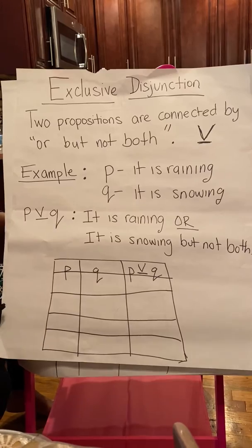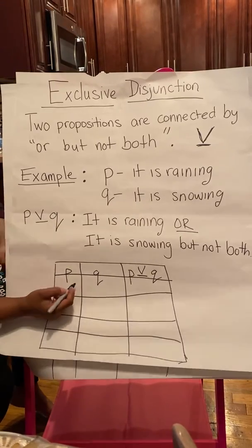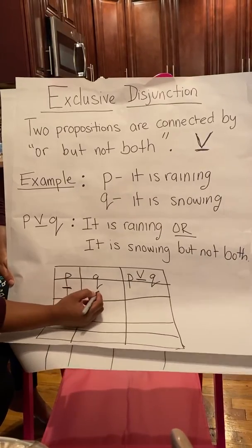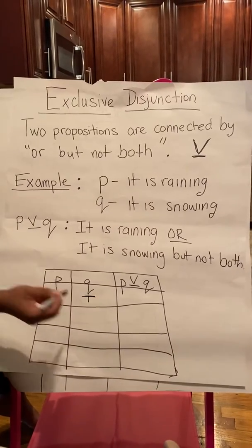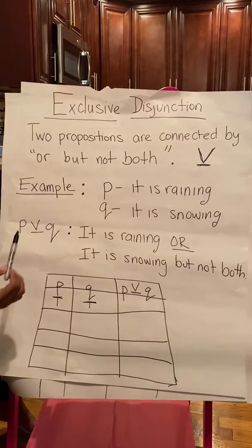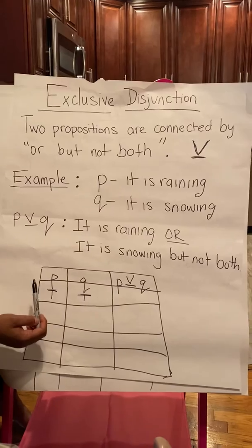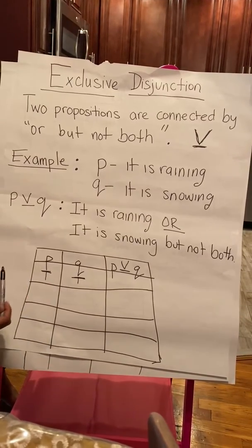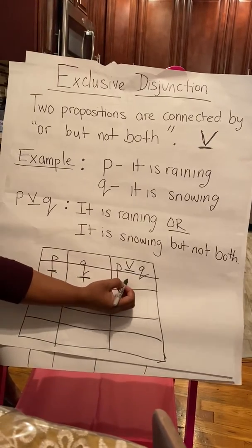Now, what does the truth table look like? If P is true and Q is true, that means P exclusive disjunction Q — that means 'or, but not both.' That means it has to be one or the other, but it cannot be both. So these both cannot be true. Therefore, this statement is false.